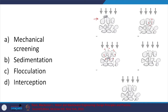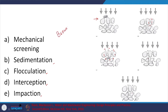Interception — water takes the particle nearer to the relevant media and then the particle is intercepted on the media. Impaction — depending on the velocity and inertial forces, and also the weight of the particles, they do not change direction with the flow of water but impact directly on the media, resulting in removal. So in summary: mechanical screening, sedimentation, flocculation within the filter, interception, impaction, and Brownian motion diffusion — these are the primary removal mechanisms.